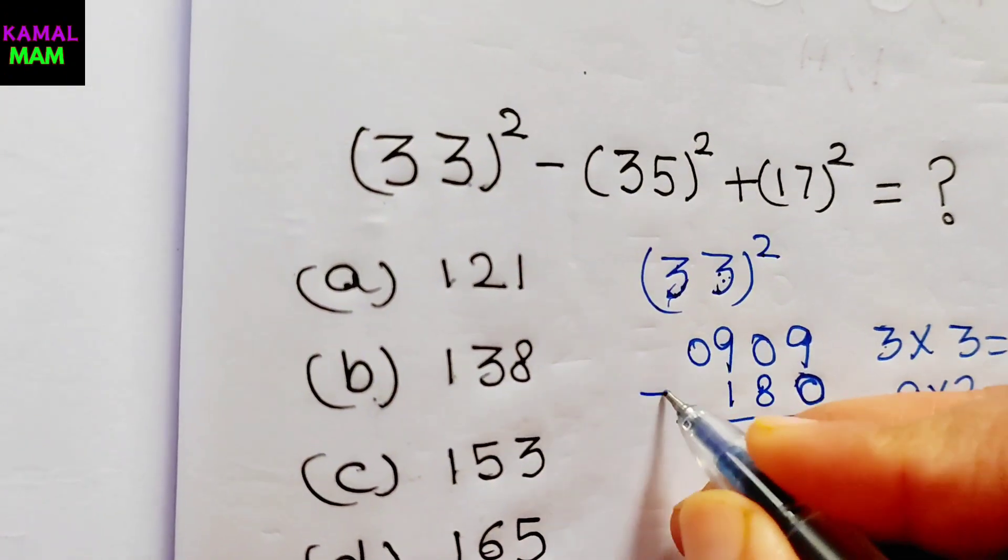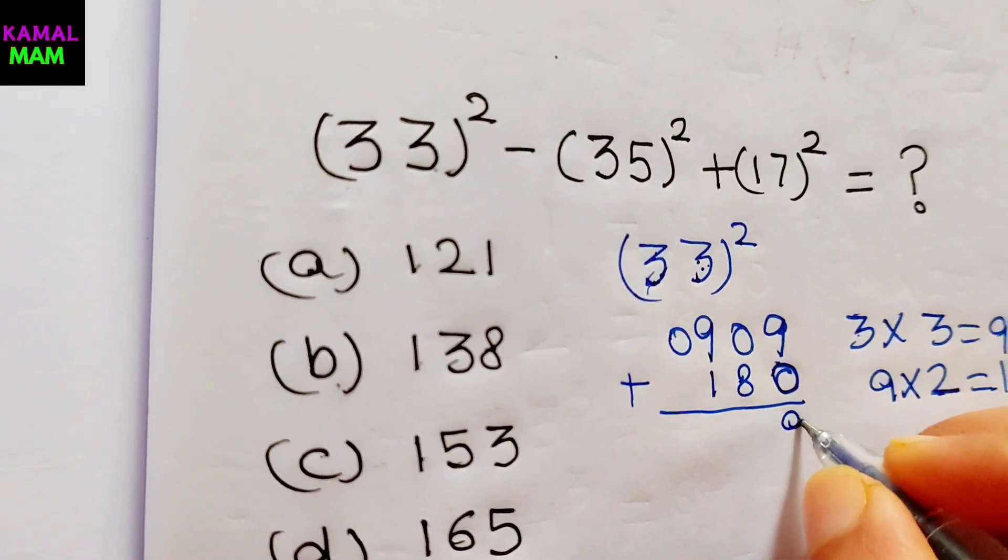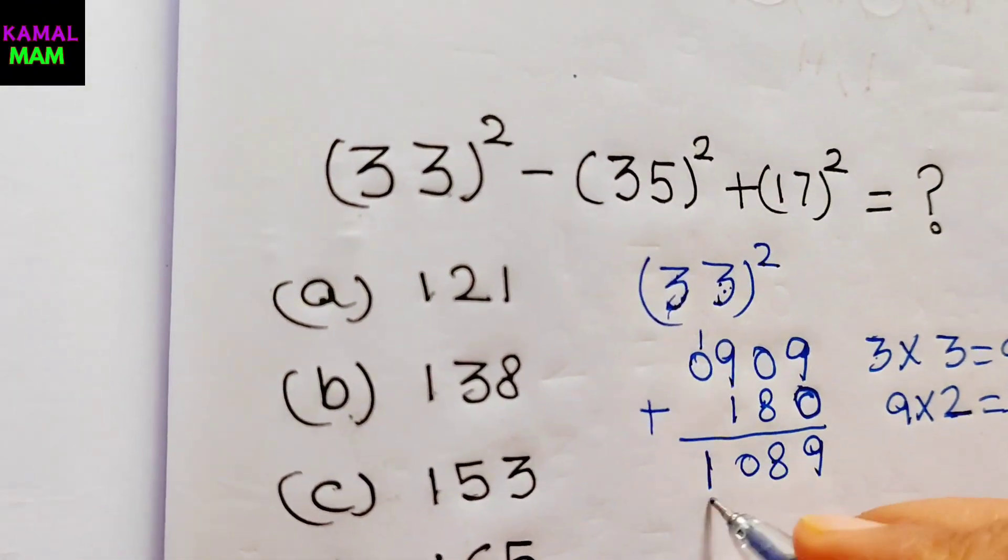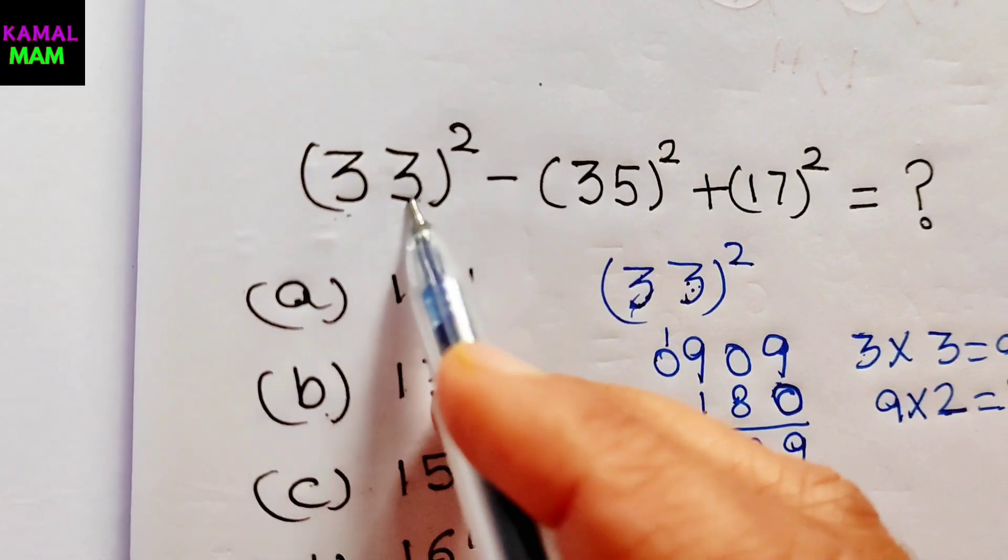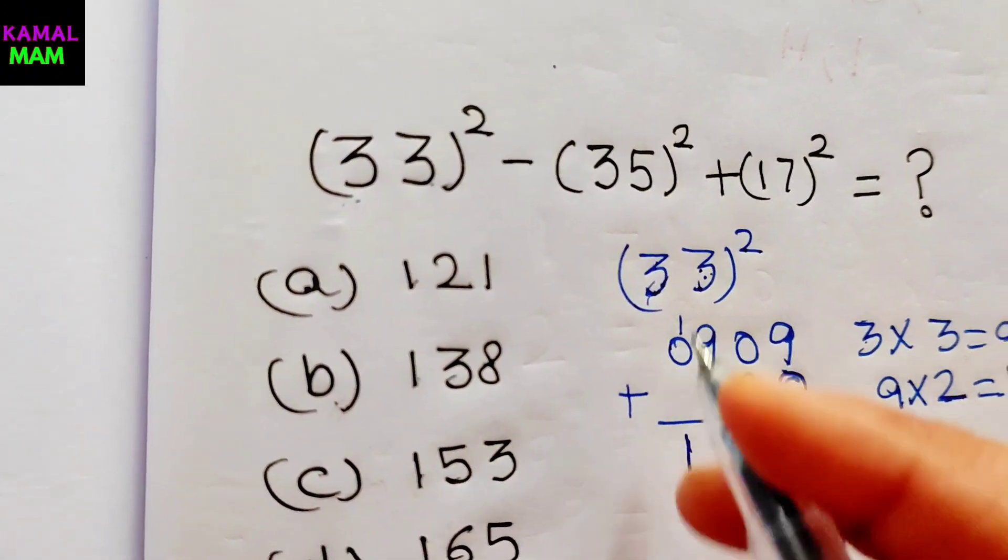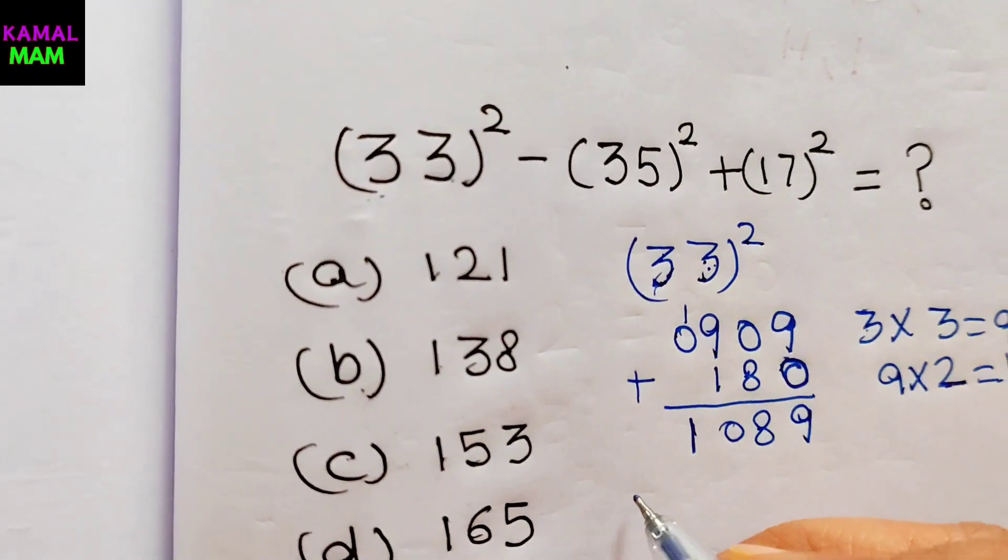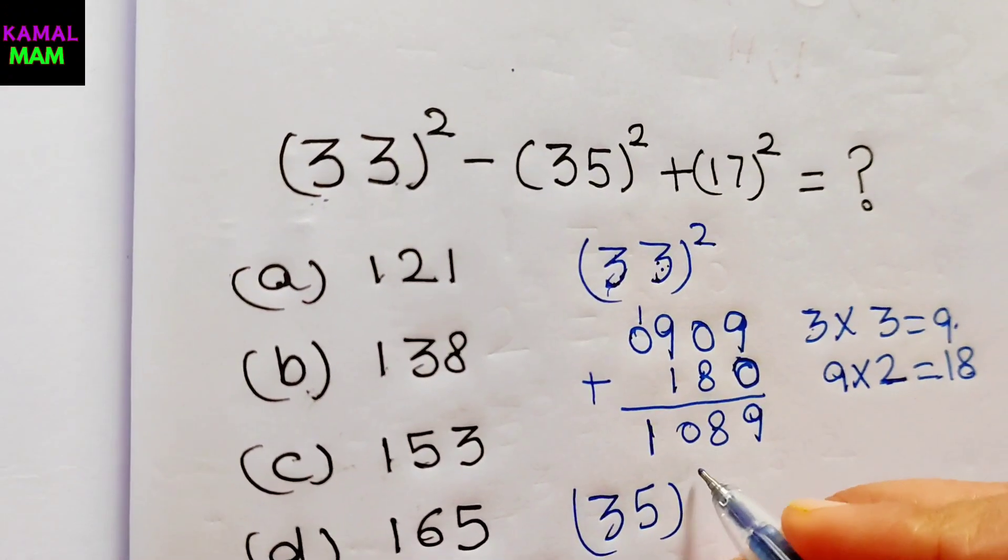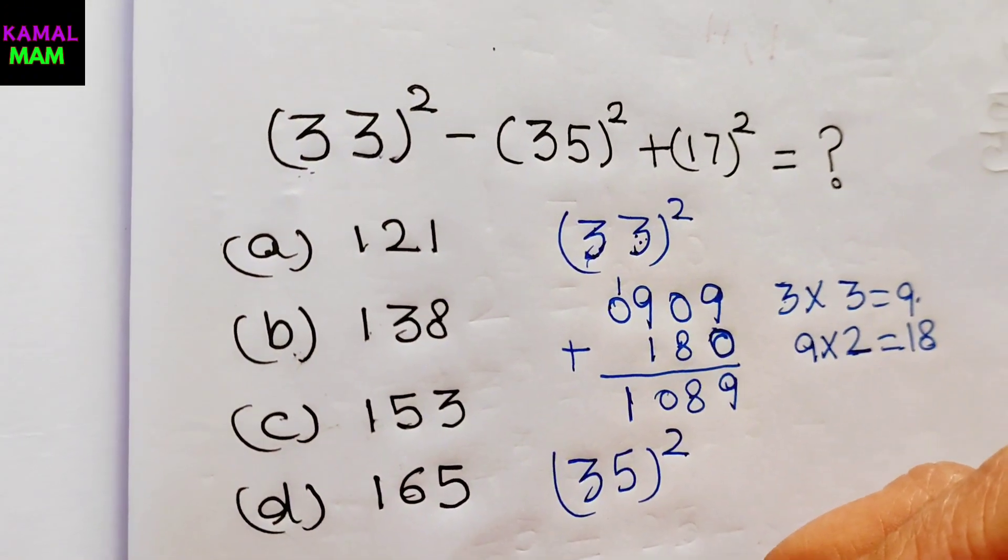Now just add them up, we get 9, 8, and here one will carry. Here we get 1089 for 33 raised to power 2. So here we can easily find 35 raised to power 2.